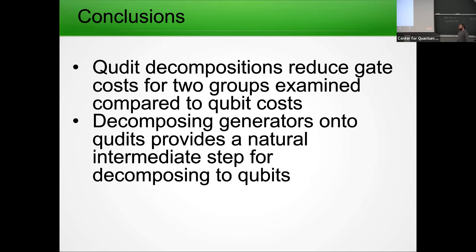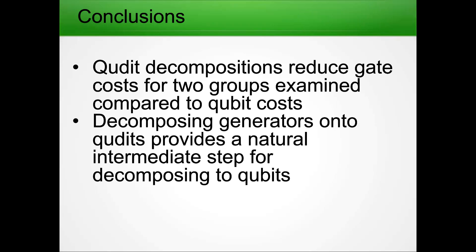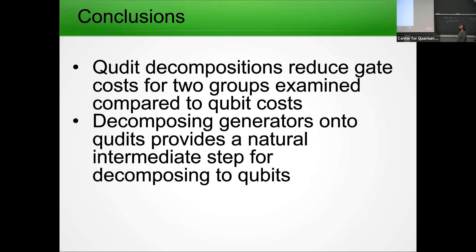Question: How big of a qudit do you need for an interesting problem — how big does N have to be? Answer: That would be group-by-group dependent, but even having a qutrit, ququart, or even at that level would be useful. There's nothing to stop you from mapping your entire group register to a single qudit other than how well you control that qudit.